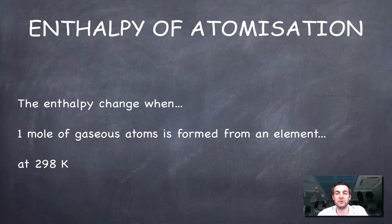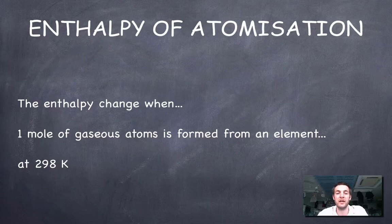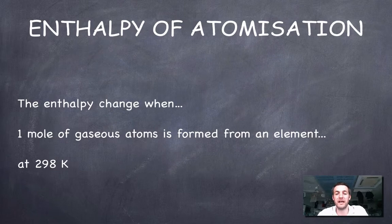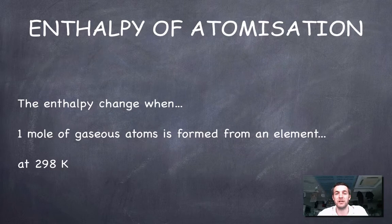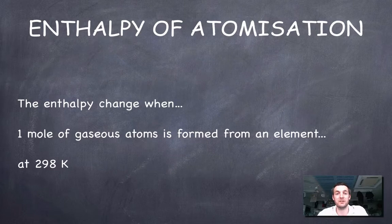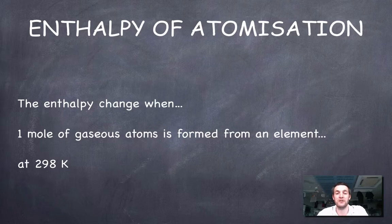Another definition because I'm sure you haven't had enough of definitions yet, this is the enthalpy of atomization and this is the enthalpy change when one mole of gaseous atoms is formed from an element at 298 Kelvin. So we're not atomizing the substance by just heating it up because we have to do this under certain conditions and again this is a very artificial situation that you couldn't do in a normal lab you need some quite high-tech equipment to measure this.